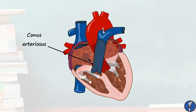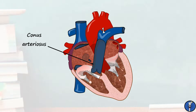The aorta and pulmonary trunk actually spiral around one another as they travel upwards. This means the pulmonary trunk actually starts anterior to the aorta before eventually sitting to its left. The right pulmonary artery passes posterior to the aorta and superior vena cava to enter the right lung, and the left pulmonary artery passes anterior to the descending aorta to enter the left lung.